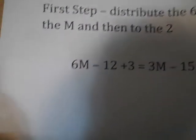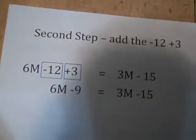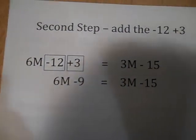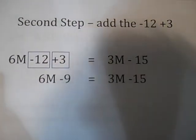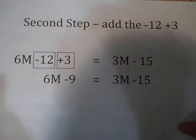And then after that, your second step should be to add the negative 12 plus the 3, so you would get 6M minus 9.